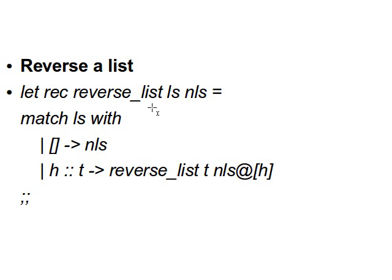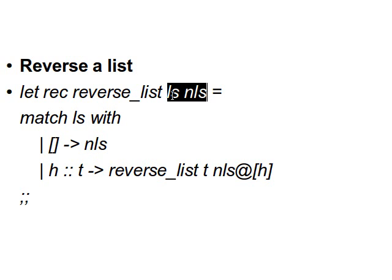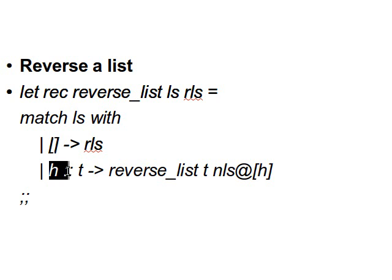Now let's look at something slightly more complicated — how we can reverse a list. Although the list module in OCaml does have a function called `rev` to reverse a list, let's develop our own. We define `let rec reverse_list ls rls` where `ls` is the original list and `rls` is the reverse list. We match `ls`: if it's an empty list then return `rls`; if not, if it has a head and tail, we call `reverse_list` with the tail.